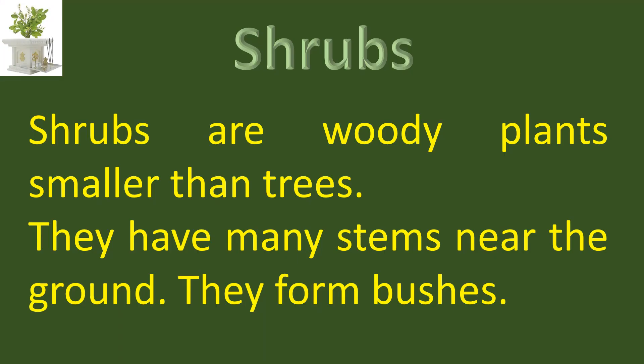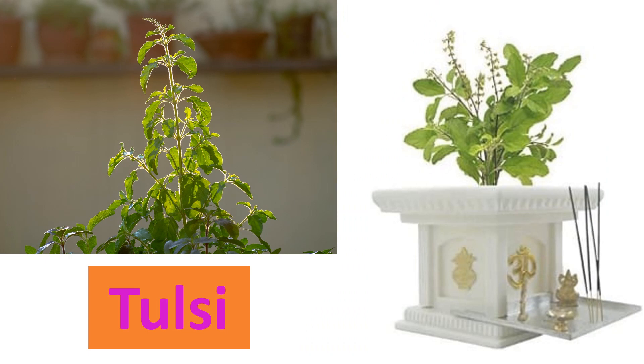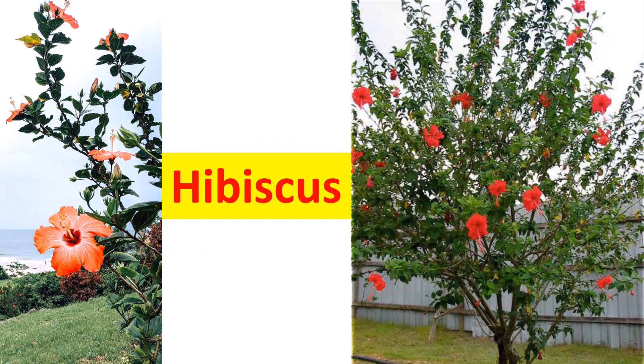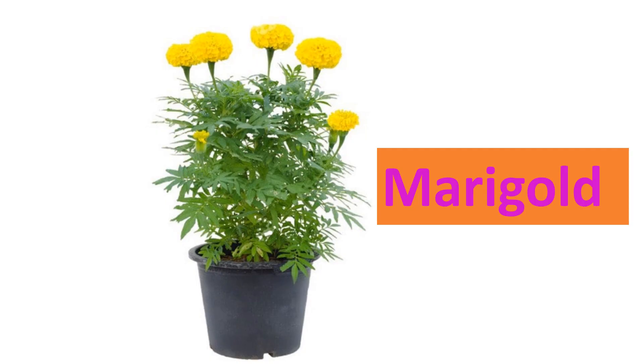Shrubs are woody plants smaller than trees. They have many stems near the ground and form bushes. Let us see some examples of shrubs: Rose, Tulsi, Hibiscus, Sunflower, and Marigold.